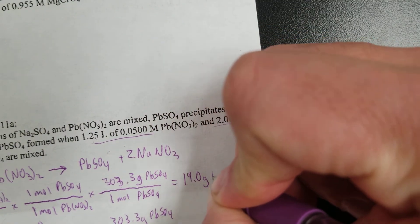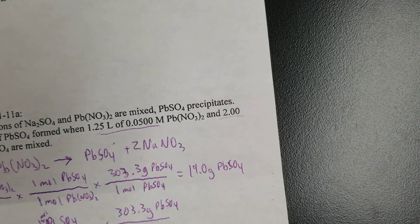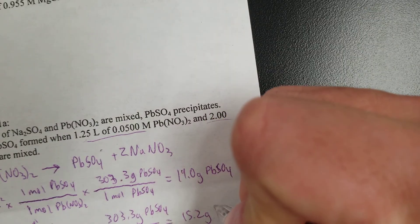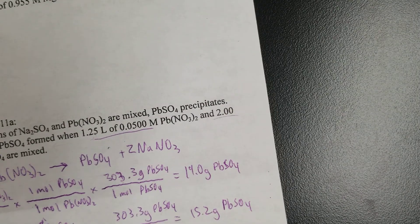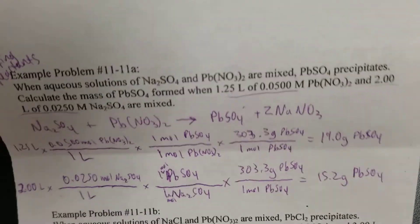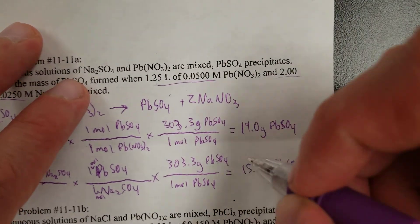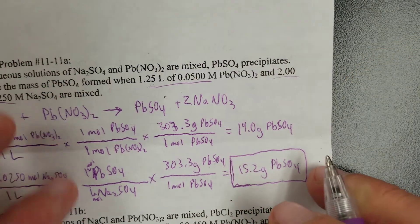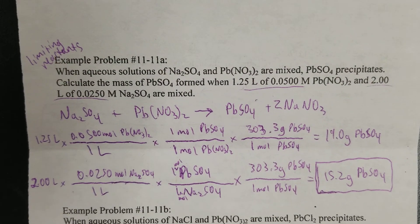For the sodium sulfate calculation, the same setup gives 15.2 grams of lead sulfate. When you have two reactants and don't know which is limiting, you pick the one that gives the smaller answer, because the limiting reactant runs out first. So 15.2 grams of lead sulfate is the final answer formed in this reaction.